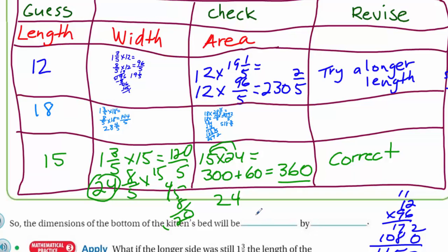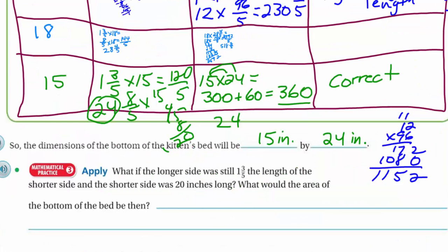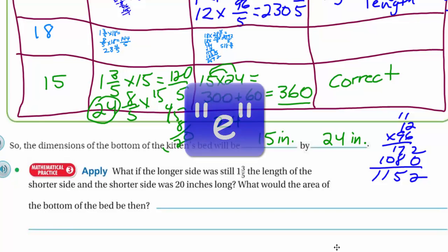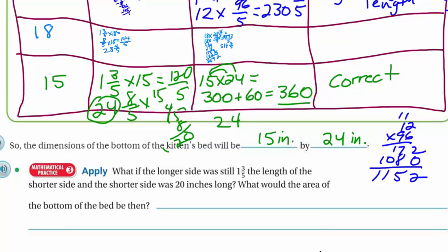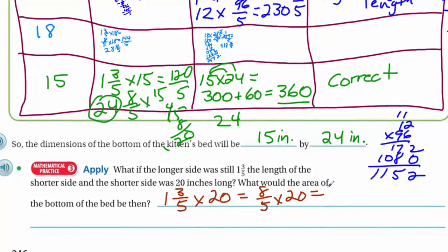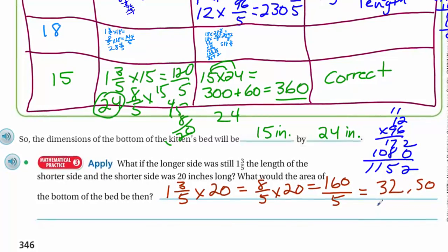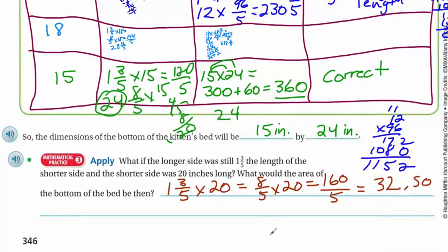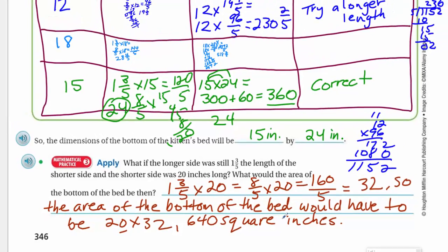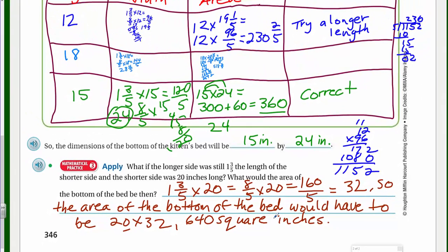The dimensions of the bottom of the kitten's bed are 15 inches by 24 inches. What a doozy of a problem! But I like all the color — the green, the blue, the red, the brown. Hopefully we weren't too loud and we woke up the kitty.